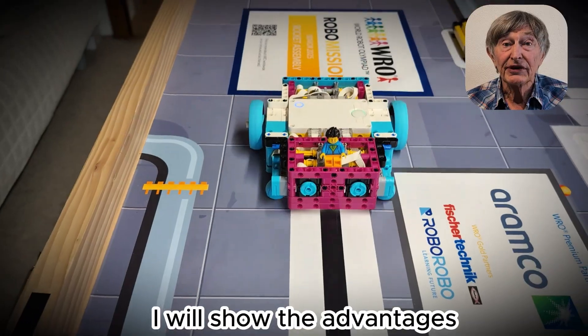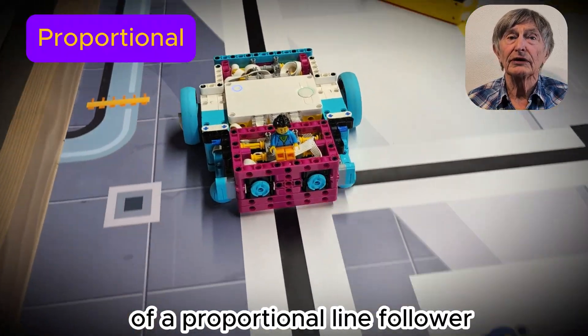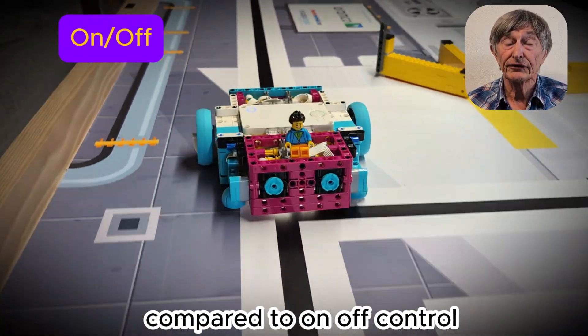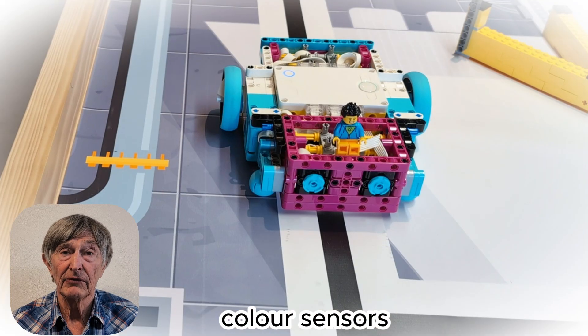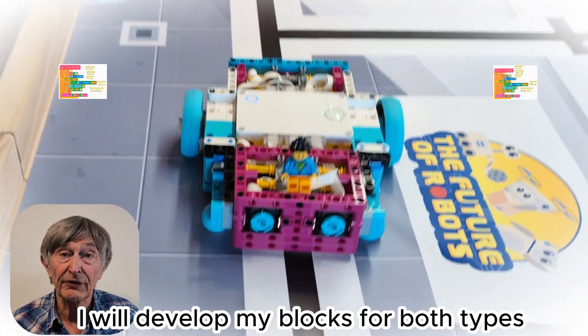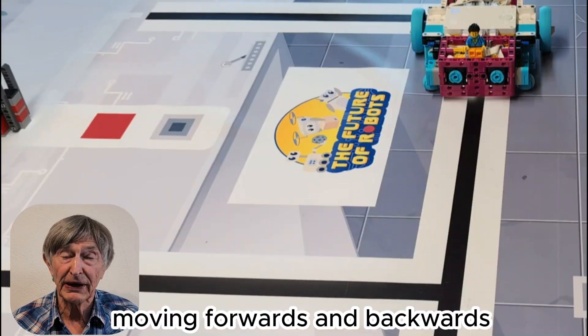To start with I will show the advantages of a proportional line follower compared to on-off control. Are you unsure whether to use one or two color sensors? I will develop my blocks for both types moving forwards and backwards.